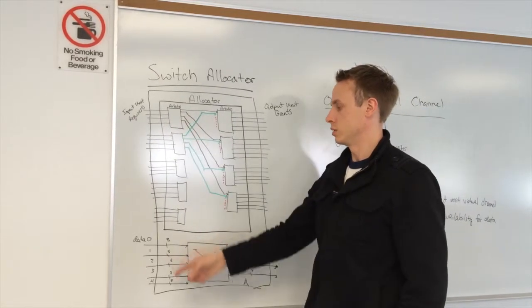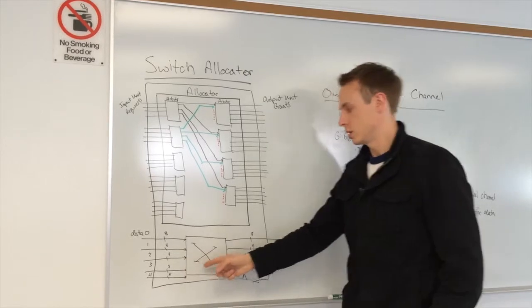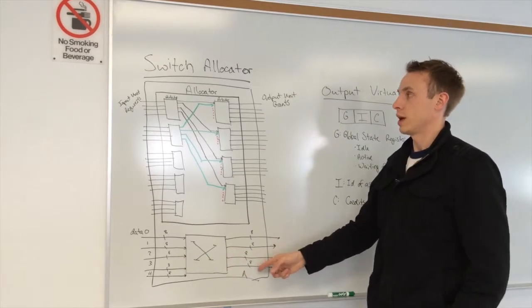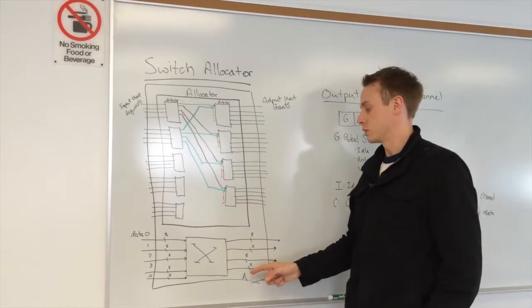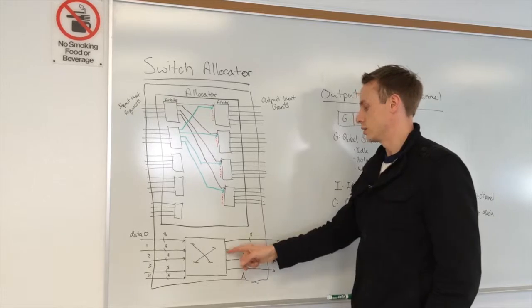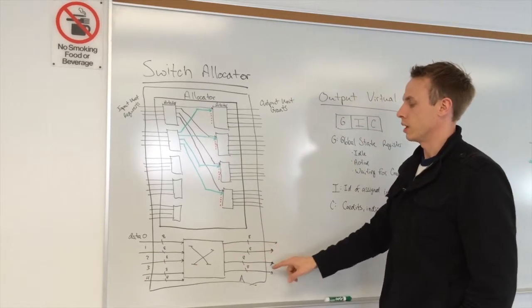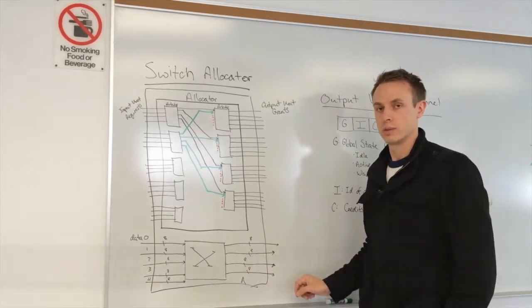data will be output to the crossbar switch, and based on the destination address that was provided from the switch allocator, it will assign the appropriate output port for our up-/downstream output.